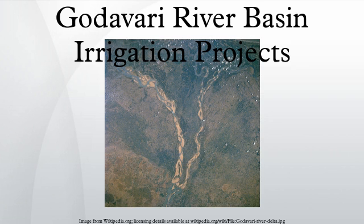Major structures in the basin include: Dowlaiswaram Barrage, Dhamagudem Barrage, Jalaput, Balimela Reservoir, Upper Kolab, Nizam Sagar, Sriram Sagar (Pochampad), Singur Dam, Lower Manair Dam, Yellampalli, Babli Barrage, and Devadula Lift Irrigation Project.